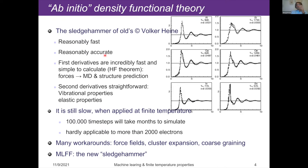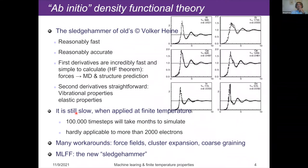DFT is reasonably fast, reasonably accurate, and one thing not often realized is that first derivatives are incredibly fast to calculate using the Hellmann-Feynman theorem. Because you have first derivatives you can calculate forces, the stress tensor, and do molecular dynamics as well as structure predictions. This is still one of my favorite examples — we simulated liquids without any input but the ionic number, and the structure factor matches experiment essentially spot on. But it's also clear that DFT is still fairly slow when applied at finite temperature.